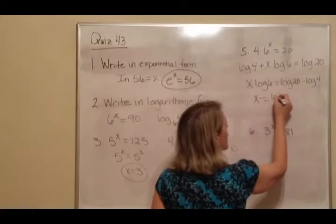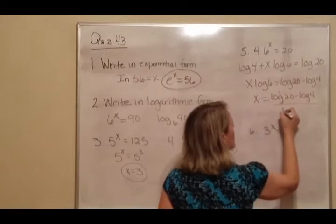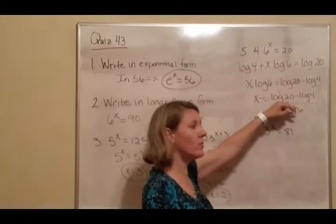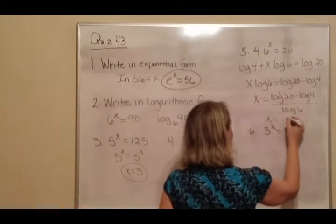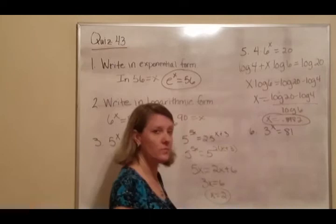So x equals log 20 minus log 4 all over log 6. And when you put that in the calculator, you'll actually put this in and then divide by this. You get 0.8982.